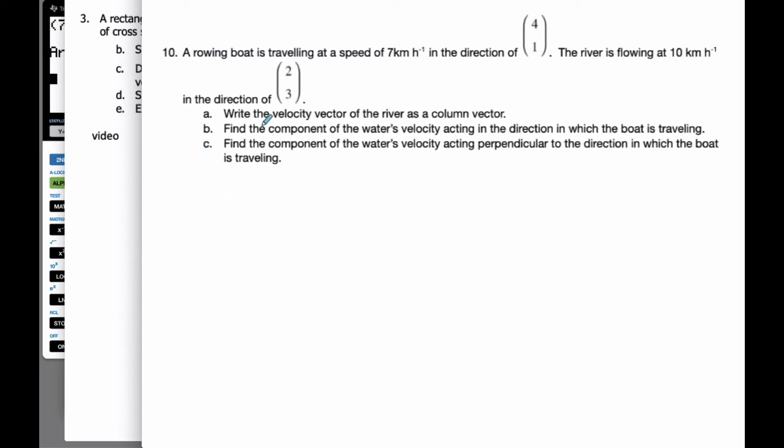Okay, so number 10, we have a velocity vector. We want to write it as a column vector. I know I have a boat traveling at this speed in this direction, so I don't have the velocity vector for the boat. The river's flowing at 10 kilometers per hour in this direction. I also don't have the velocity vector for the river.